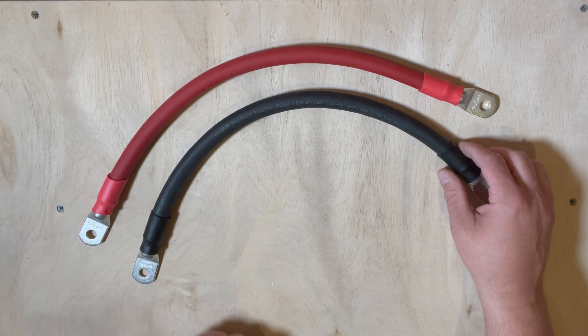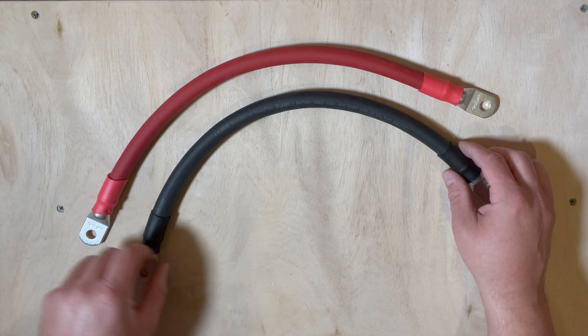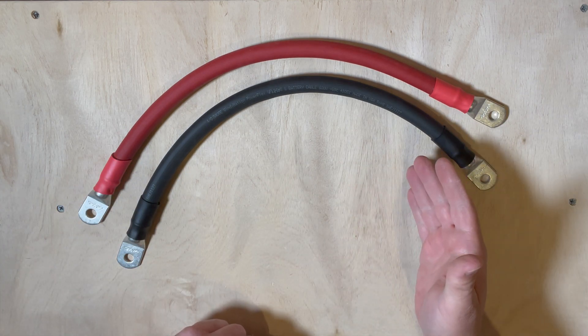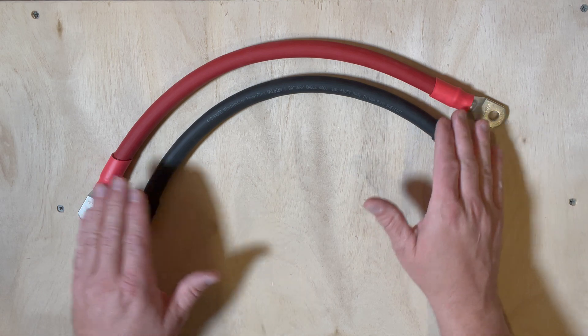I have a 4,000 watt inverter. It calls for a four-aught gauge. I have four batteries, so I need to make up a total of three of each color.